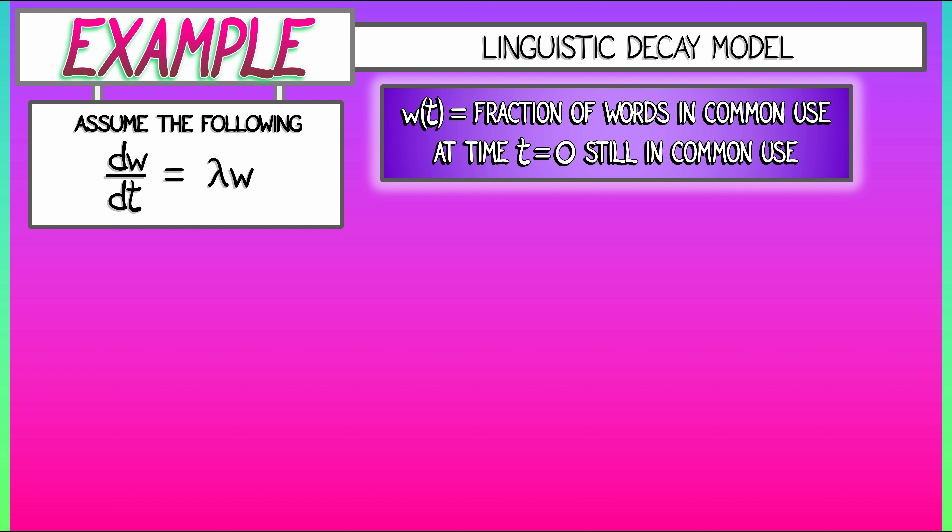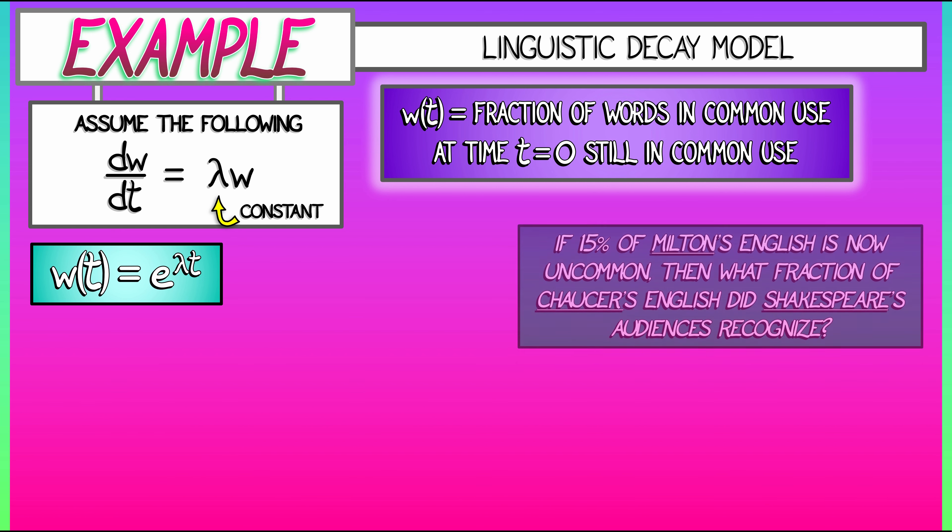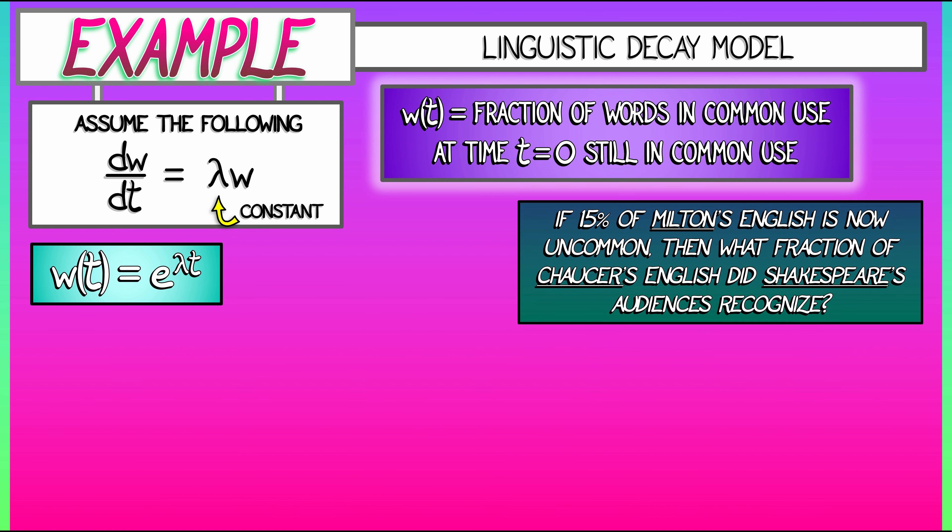This equation is not difficult. We know how to solve it. This means that w(t) is e to the lambda t. Lambda is going to be some negative constant. Assuming that, here's an interesting problem. If 15% of Milton's English is now uncommon to us today, then what fraction of Chaucer's English did Shakespeare's audiences recognize?